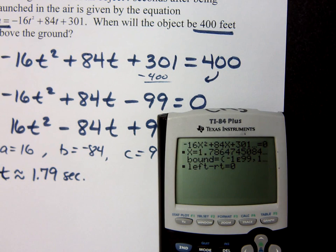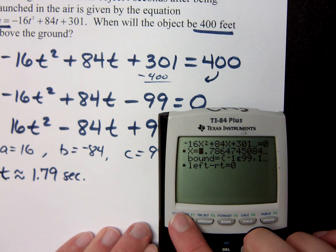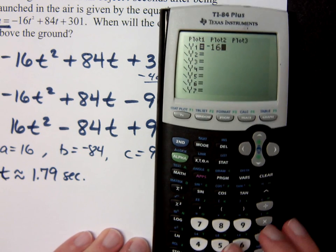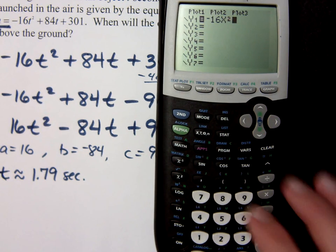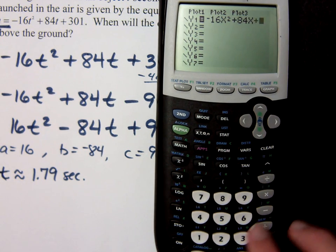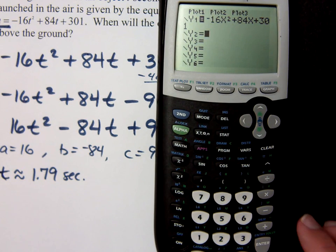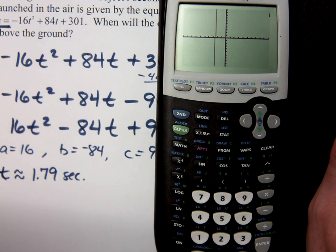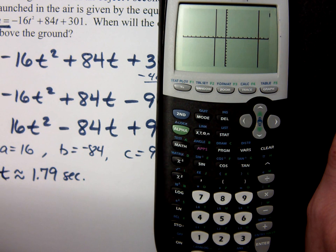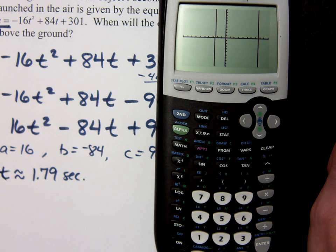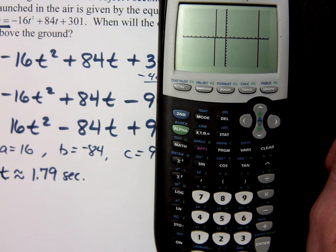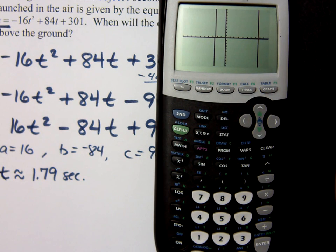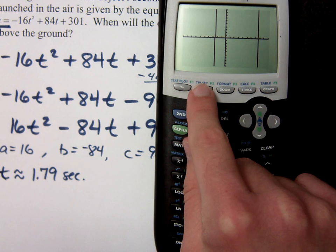Let's see how that looks whenever I graph that. So if I go to y equals and I graph this, I've got -16x² + 84x + 301. For the other equation, I have y equals 400. I want to see where do these guys intersect. So, wait a minute. See, now we've got an issue. I think it's pretty clear what the issue is. My graphing window goes from -10 to 10 in both the x and the y direction. And that doesn't really help me out because I'm talking about a y value of 400. So we go to window, and we're going to change this.